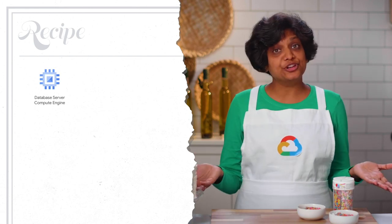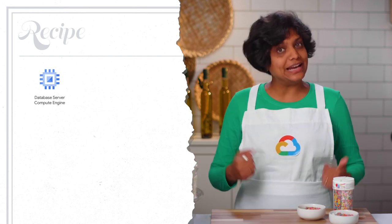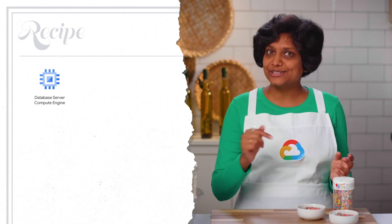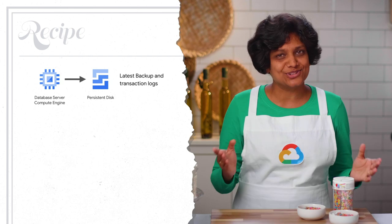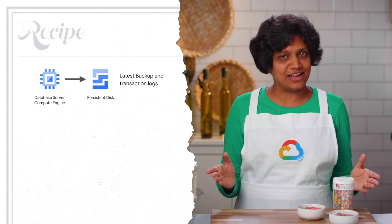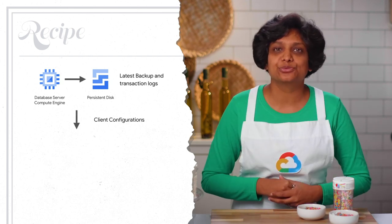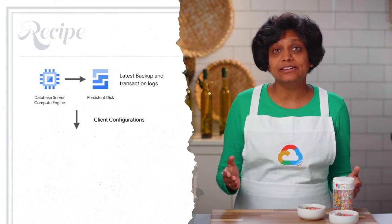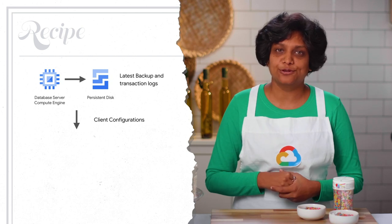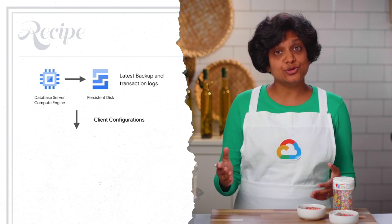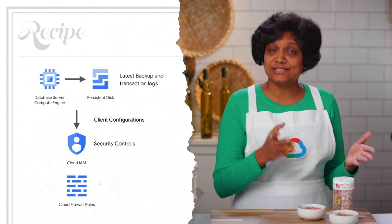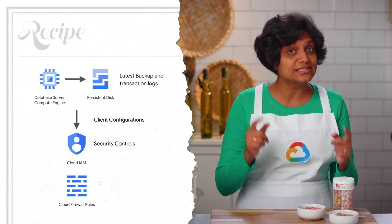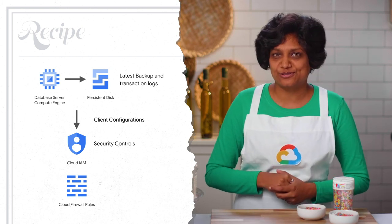In the event a replacement database instance is needed, this configuration automatically brings up another database server of the correct version, attaches a persistent disk that has the latest backup and transaction log files, minimizes the need to reconfigure clients that communicate with the database server, and ensures the same Google Cloud security controls — the IAM policies and firewall settings — apply to the recovered database server.